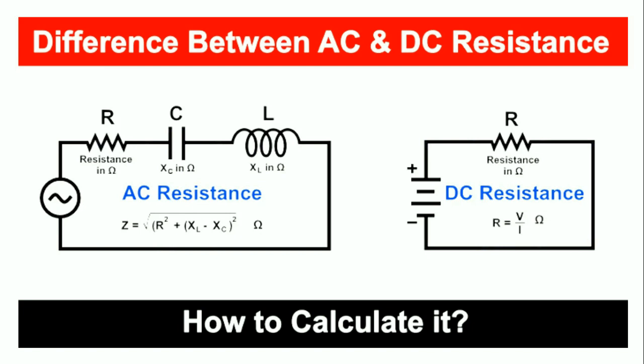So this is how we measure AC and DC resistance. One important point: XC and XL reactances are also measured in Ohms, just like a resistor.